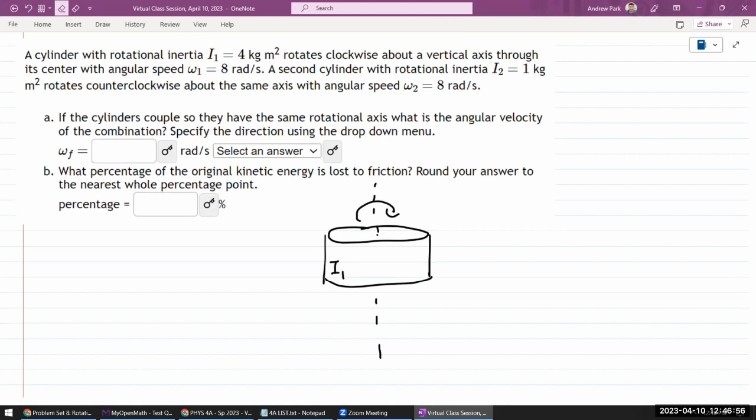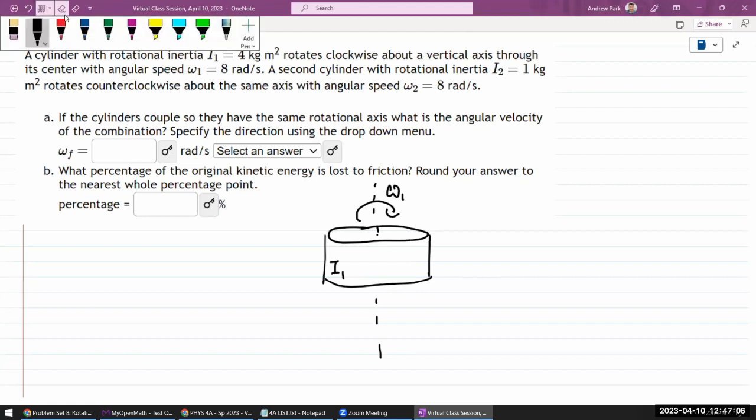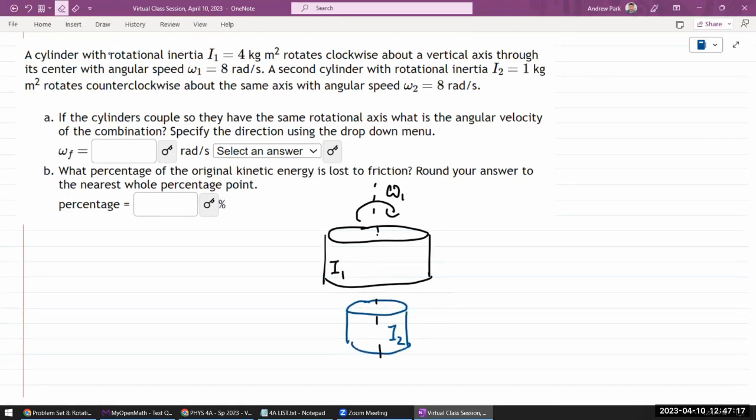It's centered with angular speed. Okay, we are given angular speed. A second cylinder with a different rotational inertia. Let me just draw that with a different, smaller rotational inertia. It rotates counterclockwise about the same axis with angular speed omega 2.